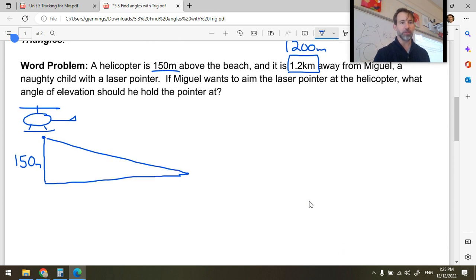So now we can put that down on our diagram. We know this is a right angle, and we know this is 1,200 meters. What we're interested in is to find this angle theta. When we look up at the helicopter, what angle are we looking up at? If we want to aim this laser pointer to shine it in the helicopter pilot's eyes. We don't want to do that, but Miguel is very naughty, as the question tells us. So what we will do here is we first notice that this side over here is the opposite, and this side over here is the adjacent. So we know a trigonometric ratio that relates opposite and adjacent, and that's tangent.